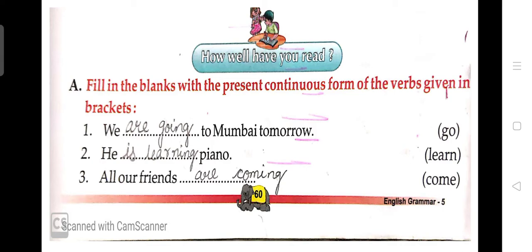In the chapter we learned that in present continuous tense we record those actions which are going on at the present. Present continuous tense में हम ऐसे actions को record करते हैं जो अभी present में हो रहे हैं। At present, what are you doing? You are watching my video. And what am I doing right now? I am teaching you. So present continuous tense records what actions are happening right now.